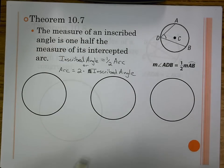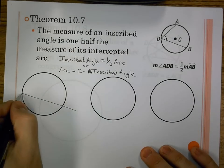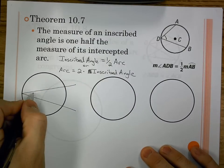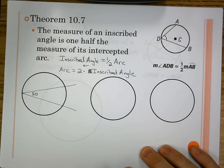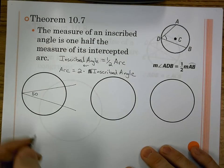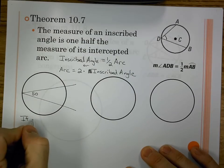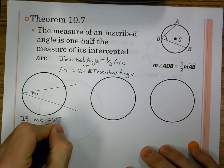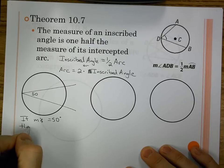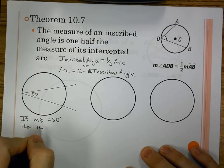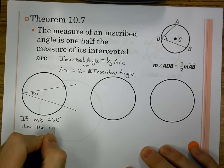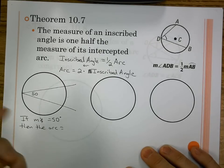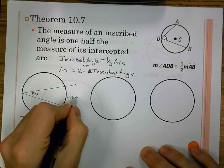Let's start with some basic examples. If 50 degrees is my angle, then the measure of the angle equals 50 degrees. The arc is twice that — 100 degrees.